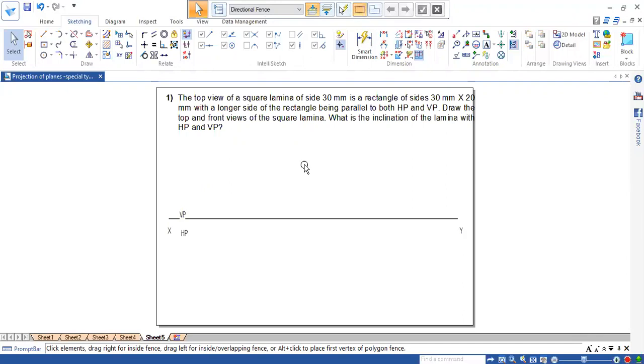They have not given whether it is lying on HP or lying on VP. Instead of that, he says that rectangle of sides 30 mm by 20 mm with a longer side of the rectangle being parallel to both HP and VP. So here they have not given inclination with respect to HP and VP. We need to find out those inclinations. Apart from that, the square, the top view of a square lamina, the square will look like a square in the top view. So they have given the square will look like a rectangle in the second position with the longer edges being parallel to HP in one of the position. And in the third position, it will be parallel to VP. So draw the square lamina.